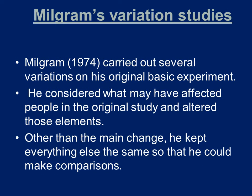Milgram carried out 19 variations in total on his basic experiment. What he's trying to do each time is determine exactly what is increasing or decreasing the levels of obedience. Apart from the one change he was making — the independent variable — everything else from the original study was kept the same with the same standardized procedure. This was a control Milgram put into place to ensure the cause and effect relationship between the IV and the DV.